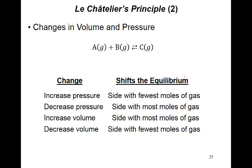The third factor is change in pressure. Remember Boyle's law: volume and pressure are inversely proportional — if volume increases, pressure decreases, and vice versa. In the example, one mole of A combined with one mole of B produces one mole of C. So we have two moles of reactants and one mole of product — reactants have a greater number of moles than the product.